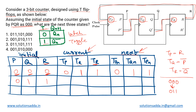So 011 is now the current state. We apply the same process: TP = R, and here R is 1, so TP becomes 1. TQ = P complement — P is zero so complement is 1. TR = Q complement — Q is 1 so complement is 0. So the current T inputs are 1, 1, 0.